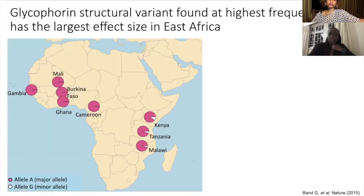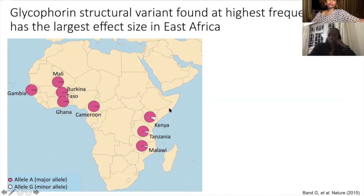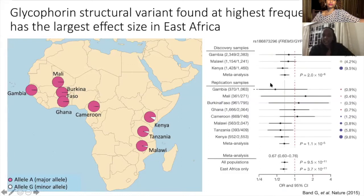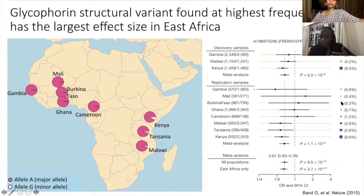A large genome-wide association study done a few years ago included populations from malaria-endemic countries in Western and Eastern Africa. They found that this novel glycophorin mutation is found at highest frequency along the Eastern African coast — specifically in the Kenyan coastal population in Kilifi, where we are based at KEMRI Wellcome Trust. The allele frequency of this mutation is about 10% in the Kenyan population, compared to much lower frequencies in Gambia, Malawi, and Cameroon.